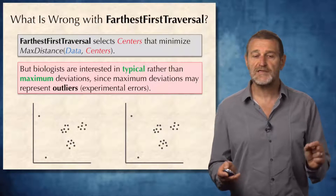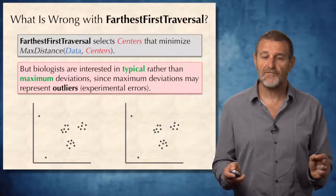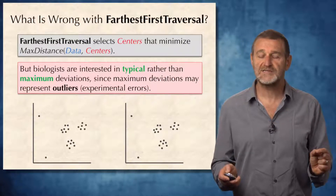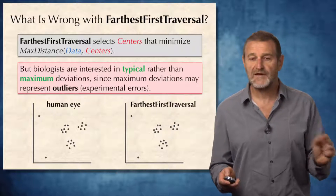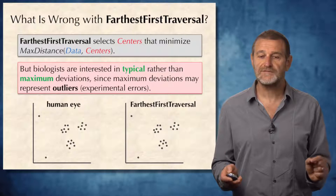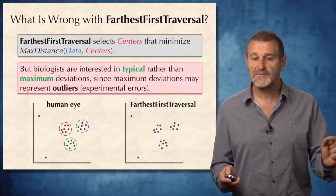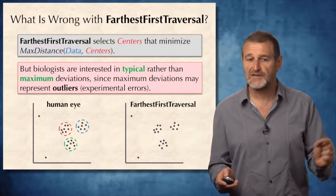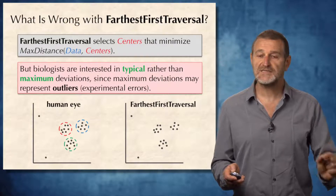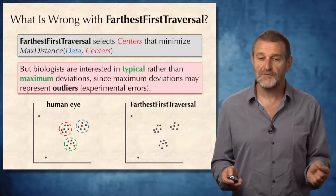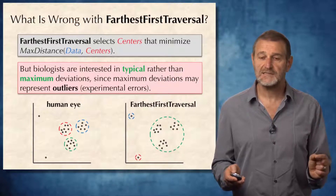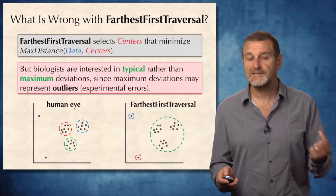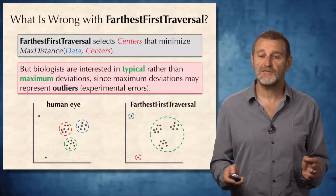For example, in a simple clustering problem presented below, let's see how the human eye and farthest-first traversal would solve it. The human eye will immediately see three clusters and ignore outliers. The farthest-first traversal, on the other hand, will construct three clusters but miss the correct clustering of points.